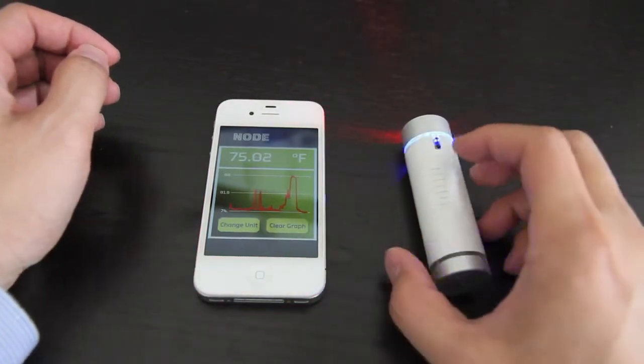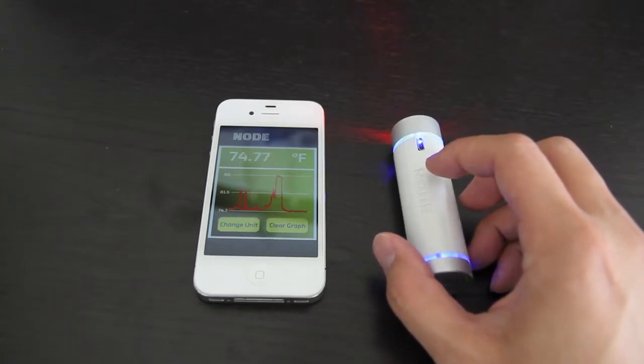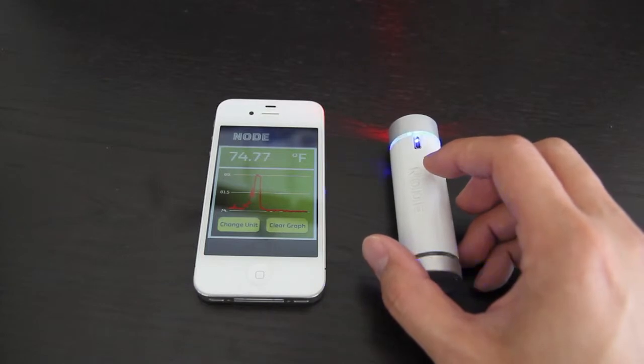It has an accuracy of 0.1 degrees Celsius and a resolution of 0.01 degrees Celsius. It has a range of up to about 15 to 20 feet. It comes out in a 10 degree cone.